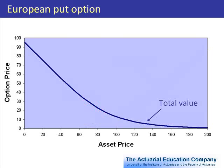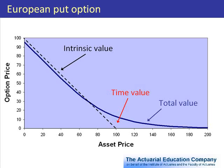Now let's move on to the put option. This graph shows the value of a put option, and the intrinsic value is shown here. For high asset prices there's no intrinsic value because the option is out of the money. But for low asset prices the option is in the money, and the intrinsic value increases at 45 degrees as we go to the left. As before, the time value is the difference between these two lines.